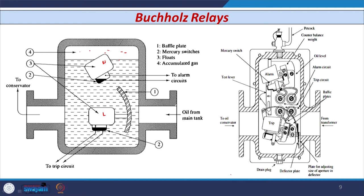Whenever any incipient fault occurs in severe mode, the lower float comes into picture. The oil level drops suddenly, which disturbs the balance of the lower float, and the mercury switch below it is actuated. This initiates the trip circuit — the trip coil of the circuit breaker is energized, which in turn isolates the transformer through operation of the circuit breaker. This is how the Buchholz relay works.